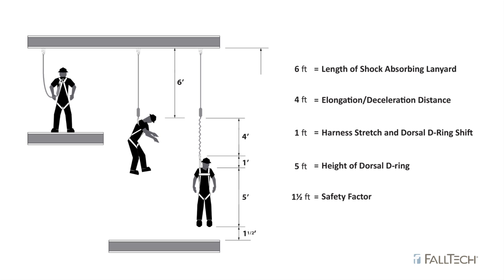In this example, the next lower level would need to be 17 and a half feet below the anchor point in order to safely protect the worker. Make sure to consult the product manual for the clear fall calculation pertaining to the device you choose.